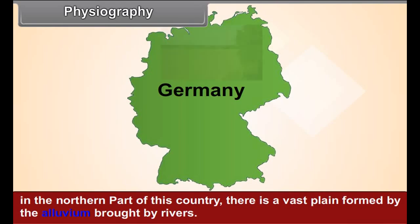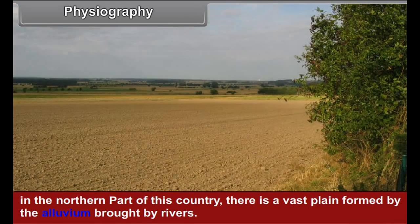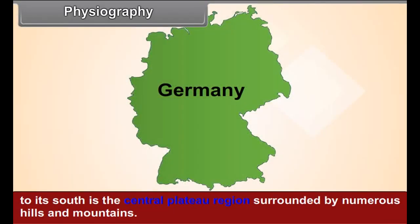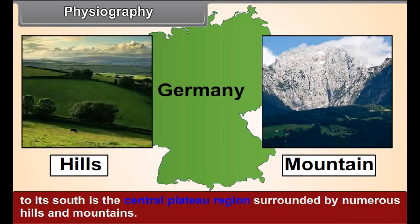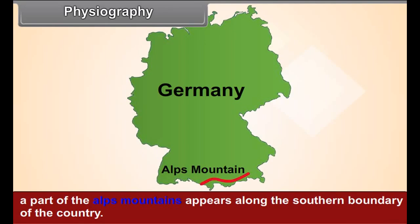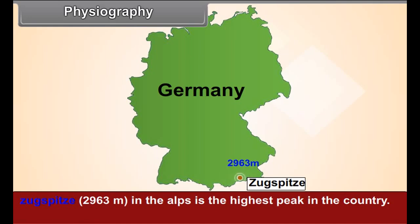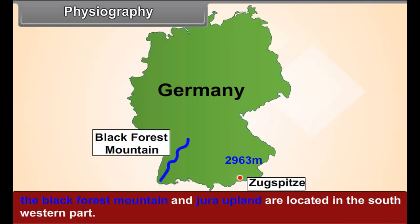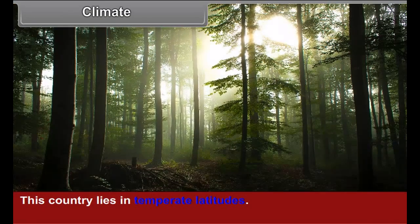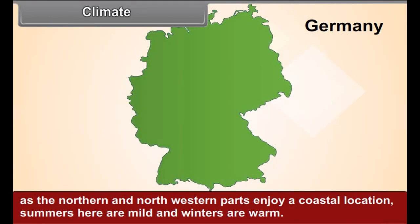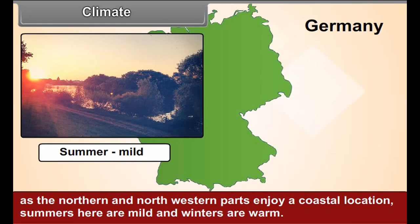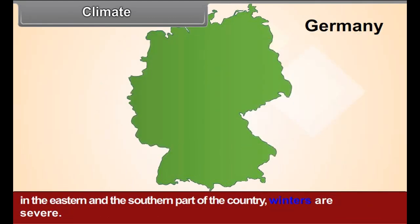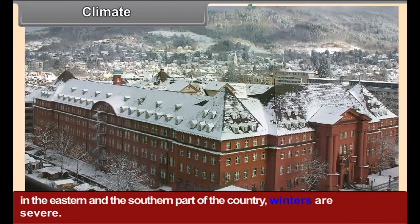In the northern part of this country there is a vast plain formed by alluvium brought by rivers. To its south is the central plateau region surrounded by numerous hills and mountains. A part of the Alps mountains appears along the southern boundary of the country. Zugspitze, at 2,963 meters in the Alps, is the highest peak in the country. The Black Forest mountain and Jura upland are located in the southwestern part.